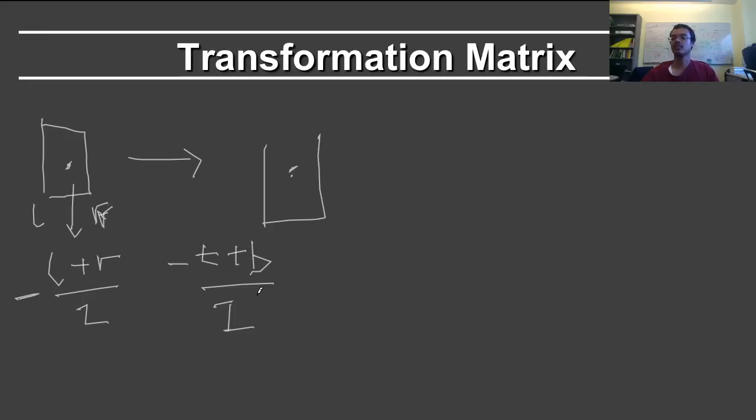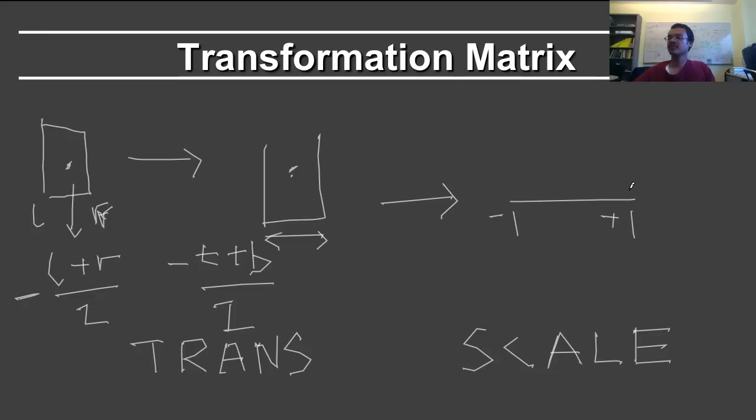The next question is, what happens to the scale? The scale will depend on the inverse of this length. So this is the translation. Now let's look at the scale. In this case, you will look at this total extent, and we'll want to scale that into the unit cube. The unit cube goes from minus 1 to plus 1, which is a total of 2 units. So the scale will be 2 units divided by the original length. This will be equal to 2 divided by R minus L. Similarly, 2 divided by T minus B, and 2 divided by far minus near.